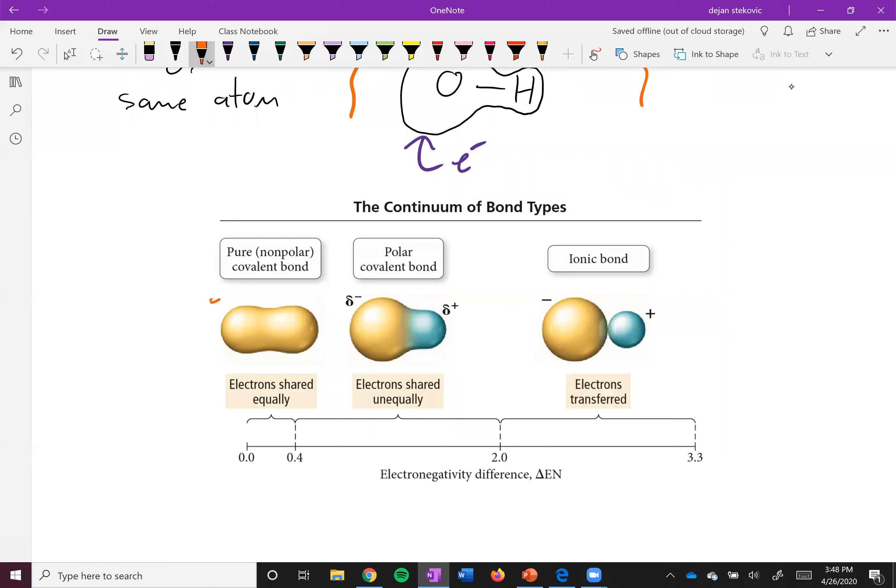So when they're approximately the same, they're equally shared, then they start getting different. Now they're unequally shared. And now they're so different that basically one takes the electrons from the other. And remember, these are not hard boundaries. Nature doesn't exactly do what we tell it to do.